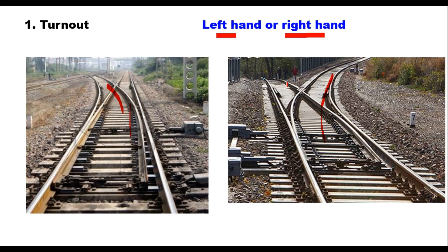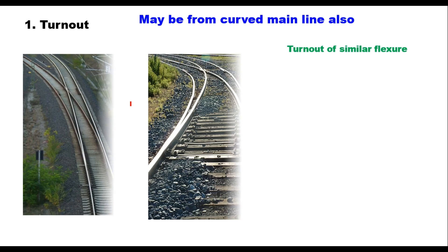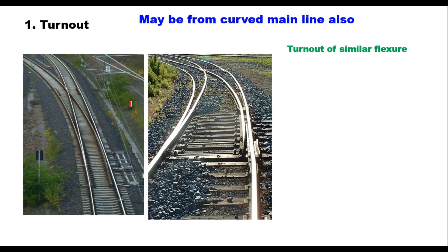A turnout can be either from a straight main line, or in some cases the main line can also be on curvature. When the main line is on curvature and the turnout also turns in the same direction as the main line, that is called a turnout of similar flexor.